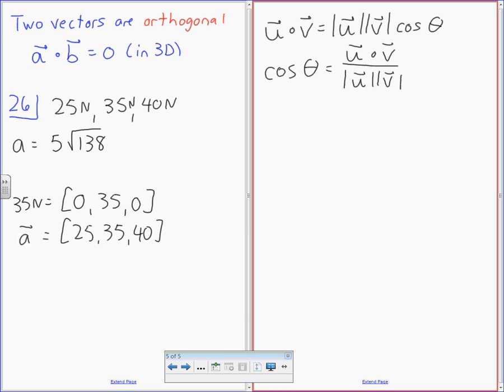So u dot v is going to be 0 times 25 plus 35 times 35 plus 0 times 40. Magnitude u is equal to 35, and magnitude v is going to be 5 root 138. But the idea, as far as a vector, you need to use it in the (25, 35, 40).